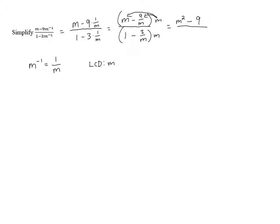So this becomes m squared minus 9. And then in the denominator, we're also going to have to distribute. 1 times m is just m. And then we have minus 3 over m times m. The m's cancel. And so we're just left with 3. So we've got m squared minus 9 all over m minus 3.